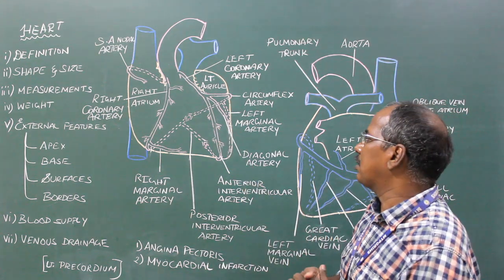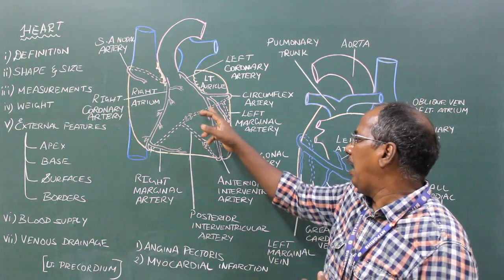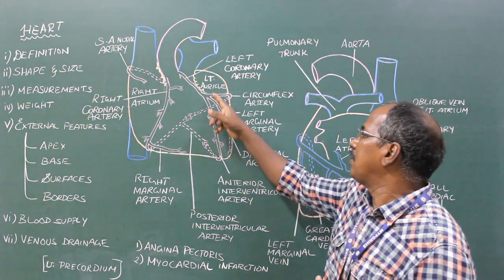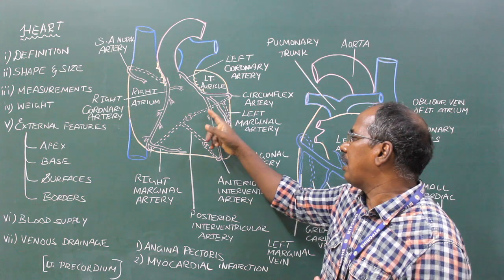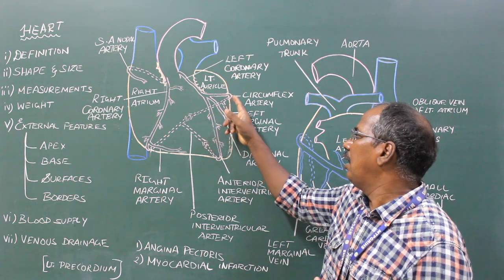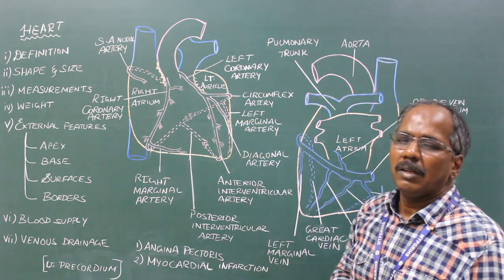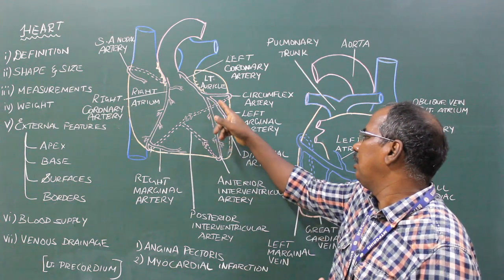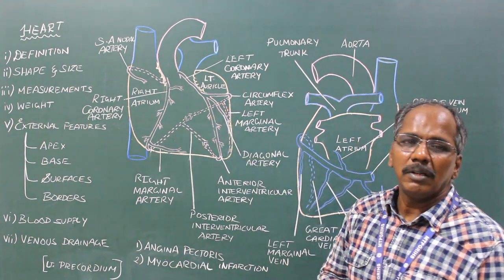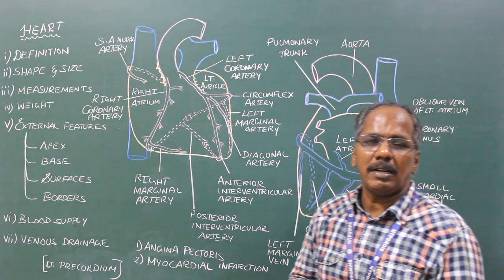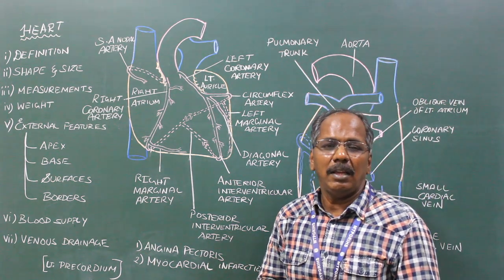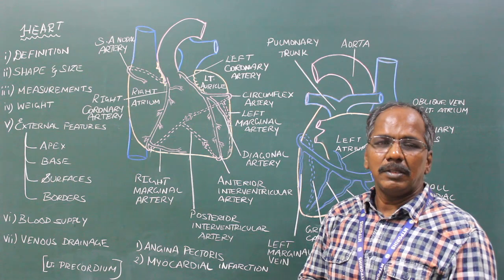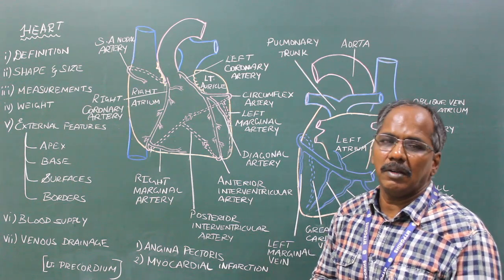Branches: number 1, anterior interventricular artery. Number 2, circumflex artery. Number 3, diagonal artery. Number 4, left marginal artery. Number 5, left conus artery. These are the branches of the left coronary artery.